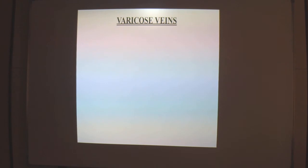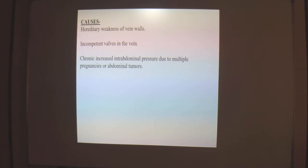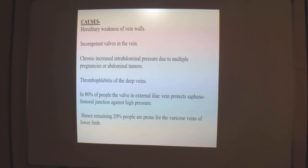A vein is defined as varicose when its diameter is greater than normal, and it becomes elongated and tortuous. Sites of varicosities in the body include: the superficial veins of the lower limb, esophageal veins at the lower end, rectal veins, and in males the testicular pampiniform plexus. Causes include: hereditary weakness of vein walls, incompetency of valves inside the vein, chronic increase in intra-abdominal pressure due to multiple pregnancy or abdominal tumors, and thrombophlebitis of the deep veins.